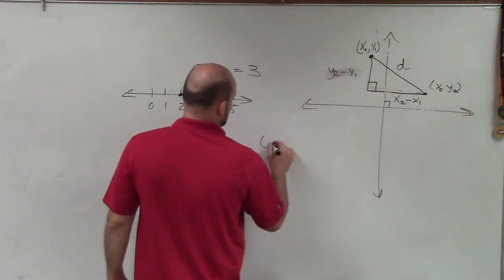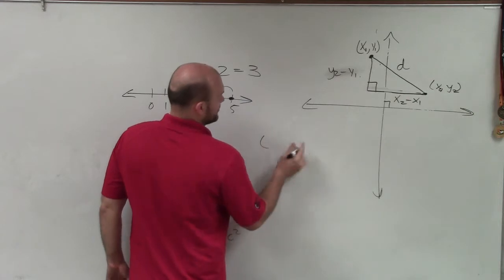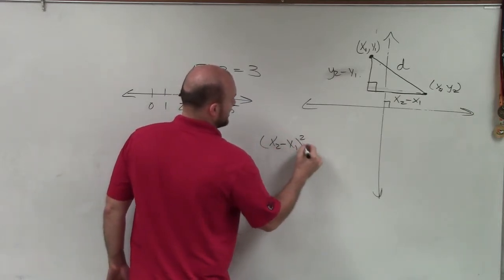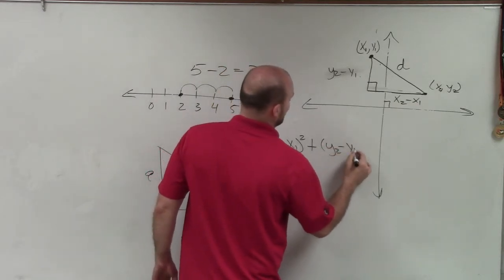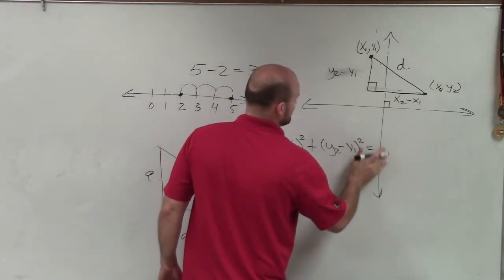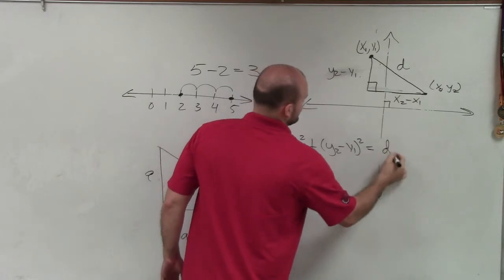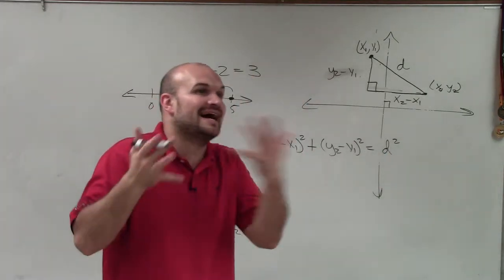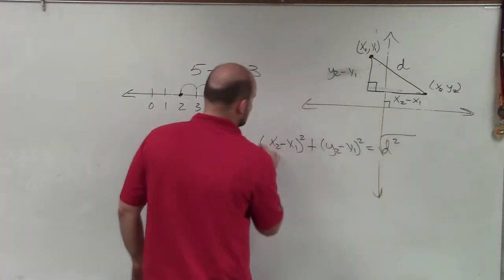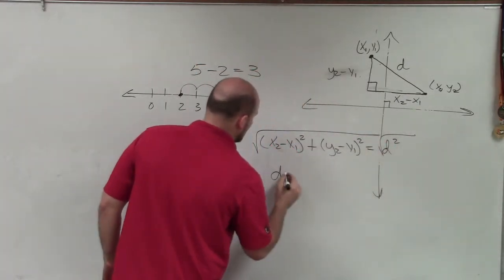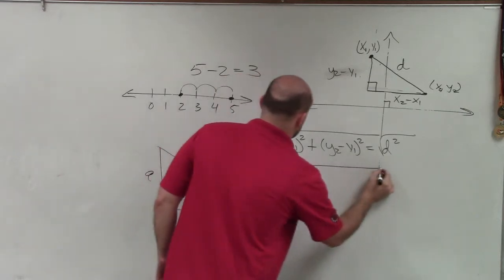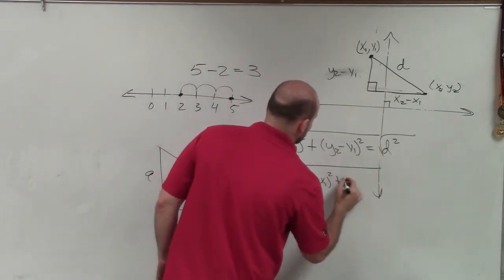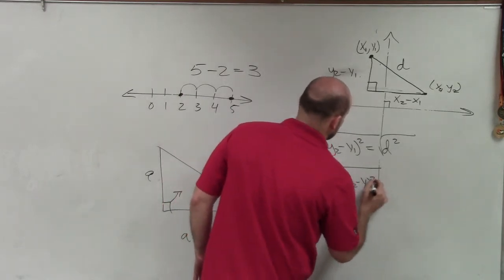Which the Pythagorean theorem would say, let's do the horizontal first, x2 minus x1 squared plus y2 minus y1 squared equals d squared. Now, obviously, for the distance formula, we're trying to find d. So I need to undo that. And I'm going to take the square root of both sides. Therefore, d equals the square root of x2 minus x1 squared plus y2 minus y1 squared.